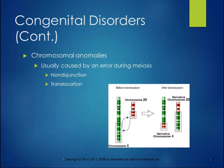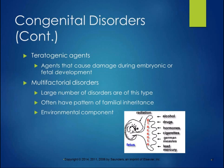Teratogenic agents are agents that cause damage during embryonic or fetal development. We discussed pharmaceutical drugs in Chapter 3, but other teratogenic agents include radiation, alcohol, drugs, hormones, cigarettes, German measles, and lead and mercury in the environment. All of these can cross the placenta and harm the developing fetus.